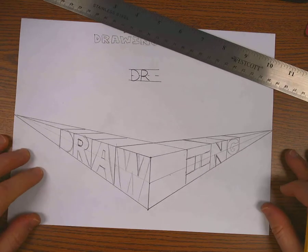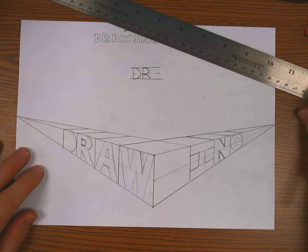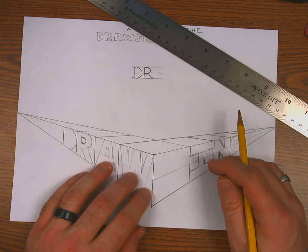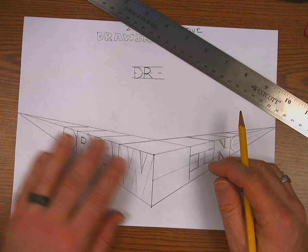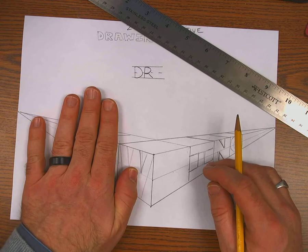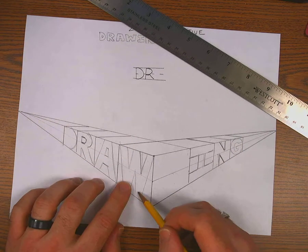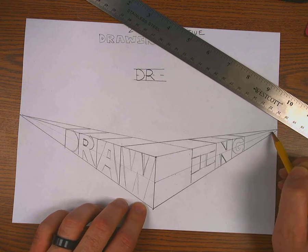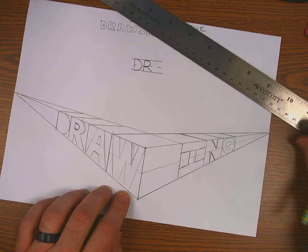And I can start to do the sides of each letter. Okay, on the front of these I went to the vanishing point that corresponded with the side of the paper they were on. So left to the left. Now to do the sides of these, I'll go to the vanishing point on the opposite side, which is the right.